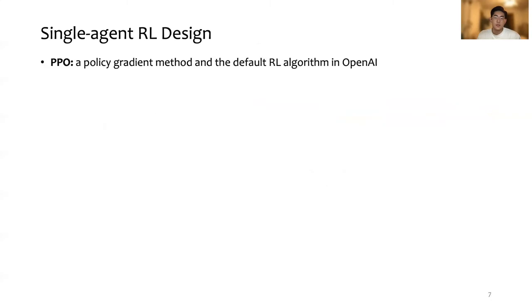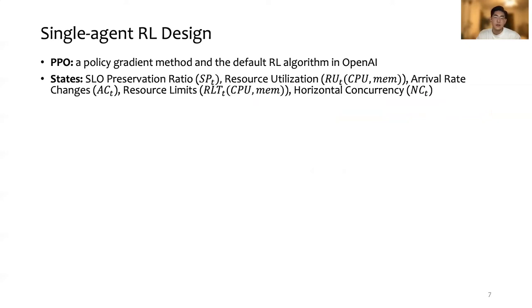We use a policy gradient method, Proximal Policy Optimization, or PPO, to learn the optimal resource management policy. PPO is the default RL algorithm at OpenAI, and performs comparably or better than the state-of-the-art approaches, while it's much simpler to tune.